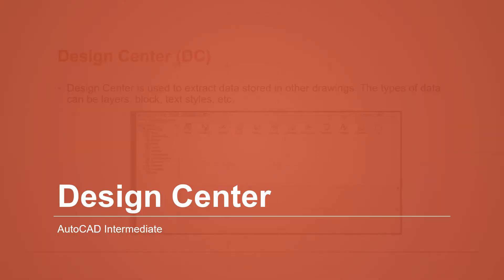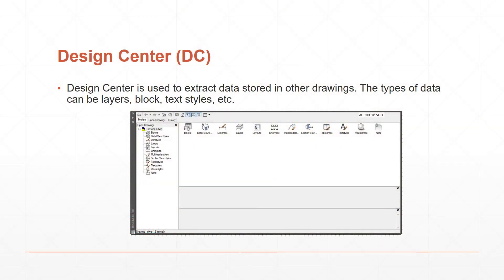The Design Center is a tool you can use to go and get stuff or extract things out of other drawings. If I have a drawing with a lot of blocks in it, I don't have to open that drawing or recreate those blocks. I can go to that drawing through the Design Center and take things out of it — blocks, dimension styles, layers, multi-leader styles, and more. You can grab a lot of different things out of a drawing if you want to borrow them from it.